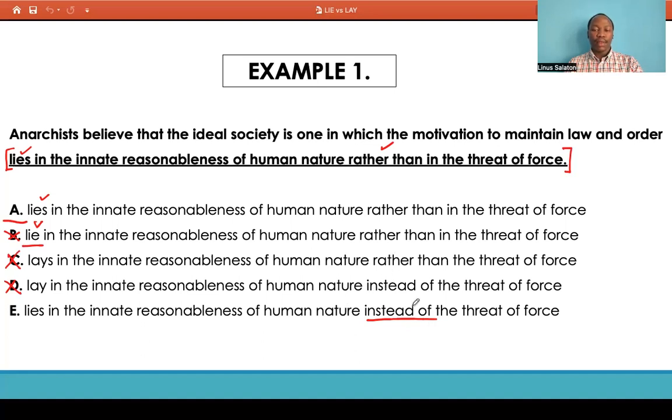Then E lies in the innate reasonableness of human nature instead of the threat of force. So again, I can see some very mistakes here. Of course, they obtained the conjunction here, they are using instead of. In GMAT, most of the time rather than would be more preferable than instead of. Furthermore, this is an aspect of parallelism here that is not being followed. For that reason E is out. The answer is A, which is lies in the innate reasonableness of human nature rather than the threat of force.